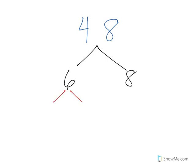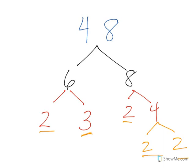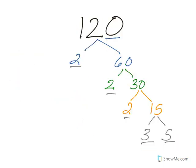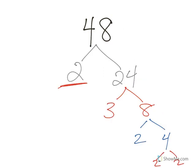Well, 6 breaks down 2 times 3, and 8 breaks down 2 times 4, and then 4 breaks down 2 times 2. So you'll notice we had 4 2s and a 3. And if I go back to my very first page, I had 1, 2, 3, 4 2s, and a 3.